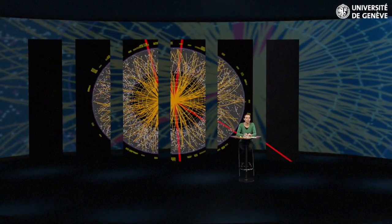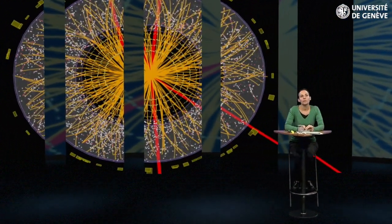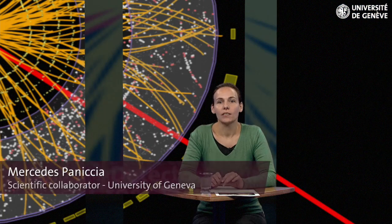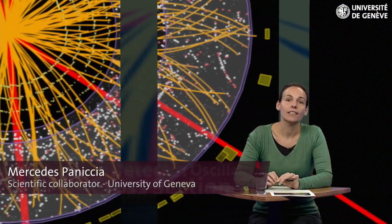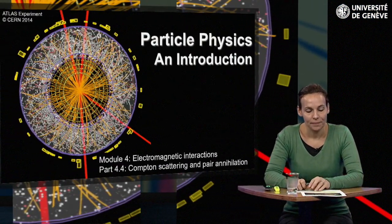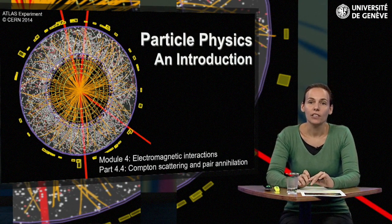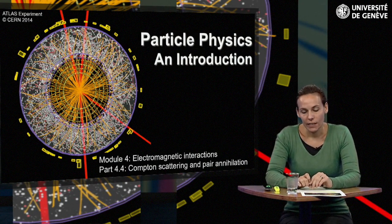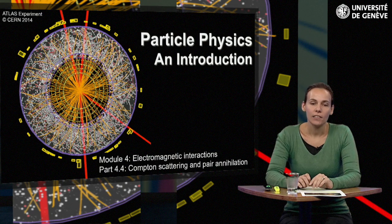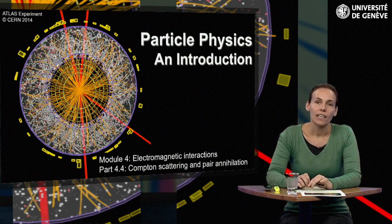During this first module we are going into more details about the properties of electromagnetic interactions. In this first video we describe Compton scattering which we already encountered in module 3 when we discussed the interaction of photons in matter.